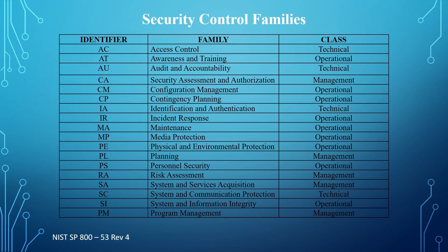These are the security control families. This table identifies the control families and maps each to its control class, showing the identifier, the family, and the class. For example, the AC control — access control — is mapped to the technical control class. The AT control — awareness and training — is mapped to the operational control class. The AU control — audit and accountability — is mapped to the technical control class. The CA control — security assessment and authorization — is mapped to the management control class. All these controls are used to secure an information system.